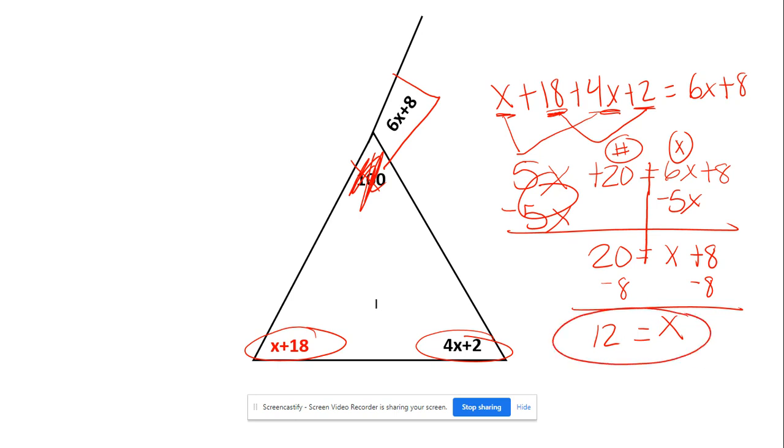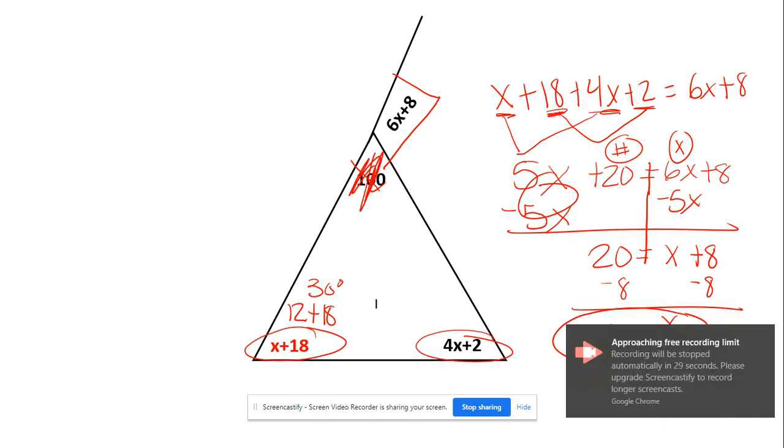Now am I done? I hope you are saying no, I'm not. Because I need to find this red angle right here. Now I'm going to rewrite it. I don't want the X. So I'm going to plug it in. So 12 plus 18. And what is 12 plus 18? We get 30. So our answer is 30 degrees.